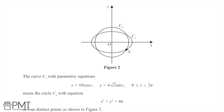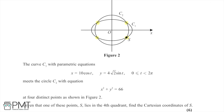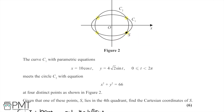In this question we have two curves. Curve C1 is given with parametric equations x = 10cos(t) and y = 4√2·sin(t), which forms an ellipse shape on the diagram. This meets circle C2 which has equation x² + y² = 66, the standard form of a circle equation. These two curves meet at four distinct points, and we're told that point S lies in the fourth quadrant. We need to find the Cartesian coordinates of S.